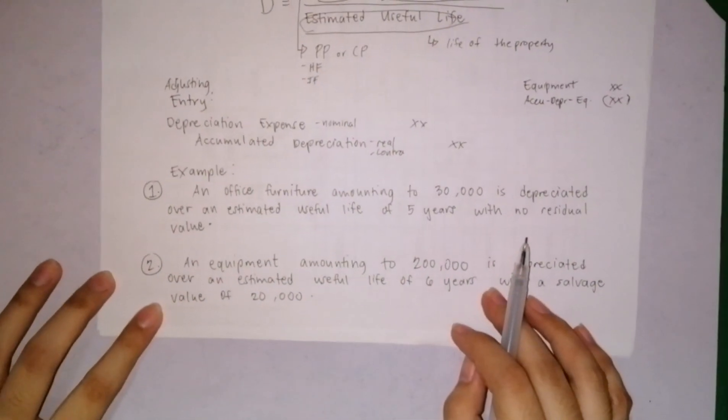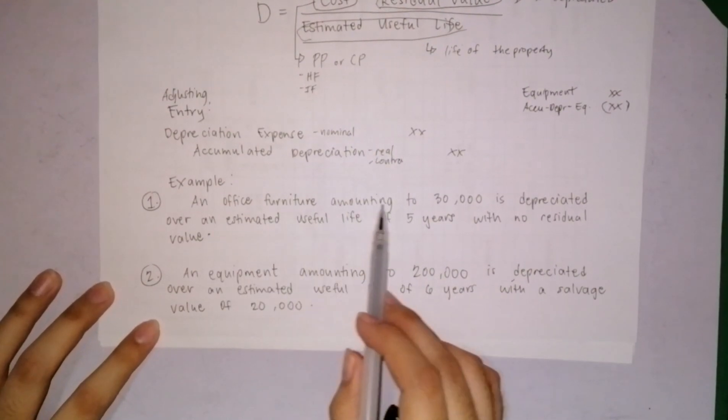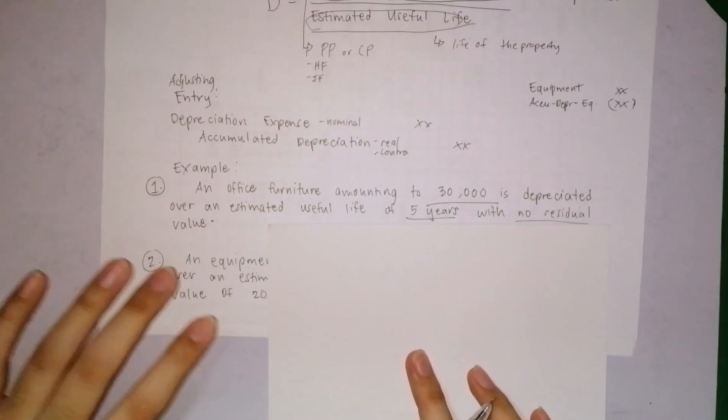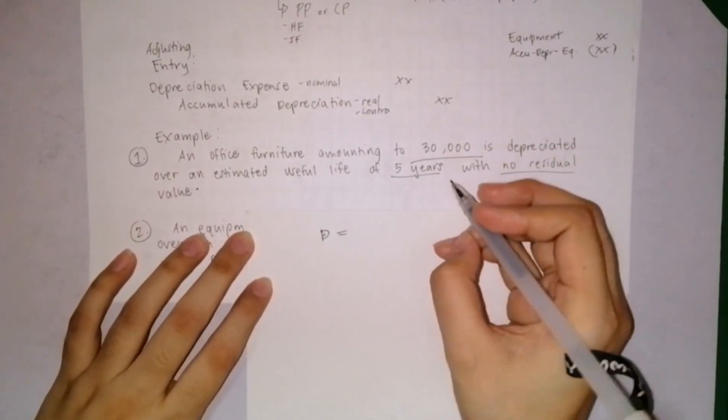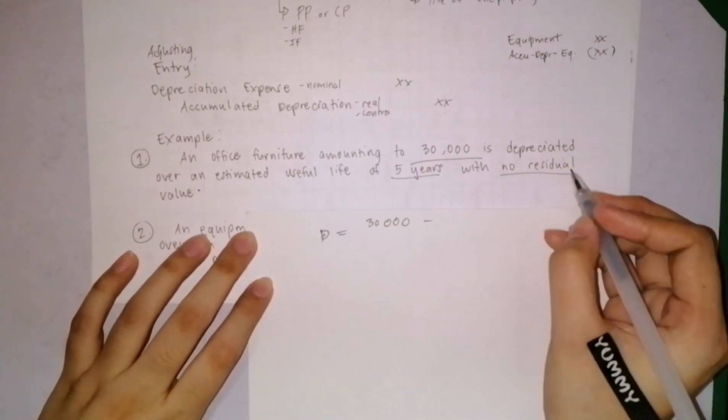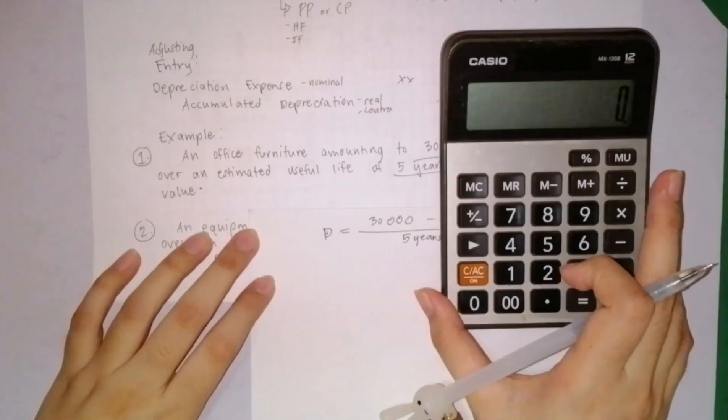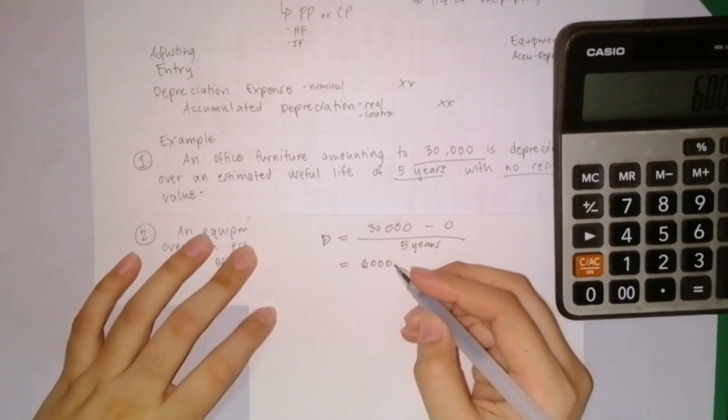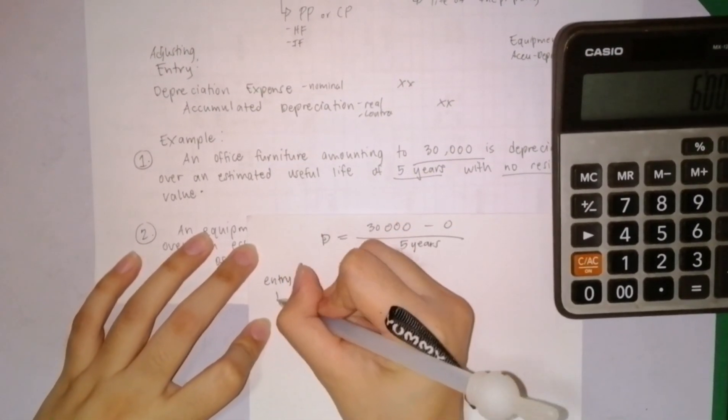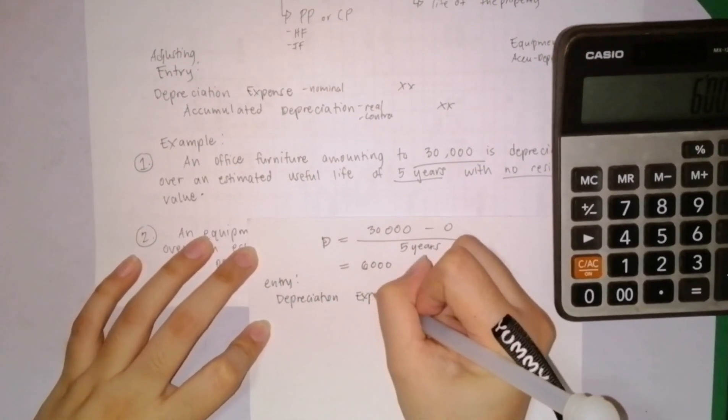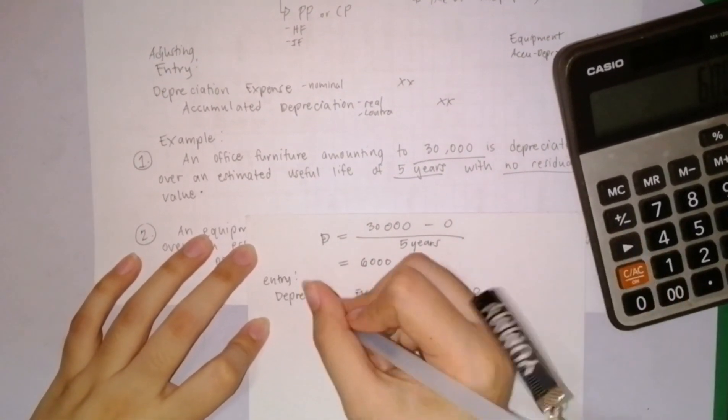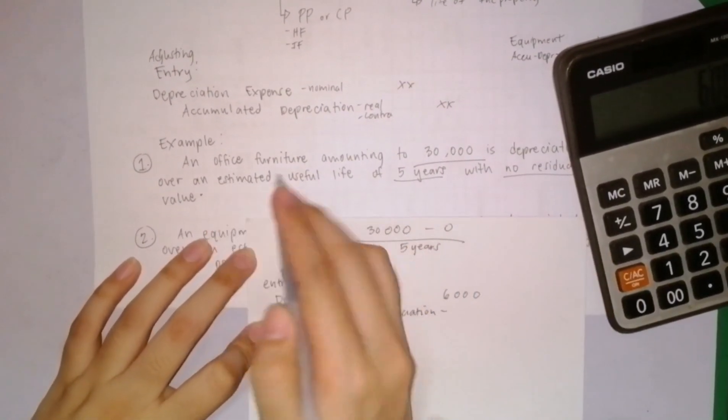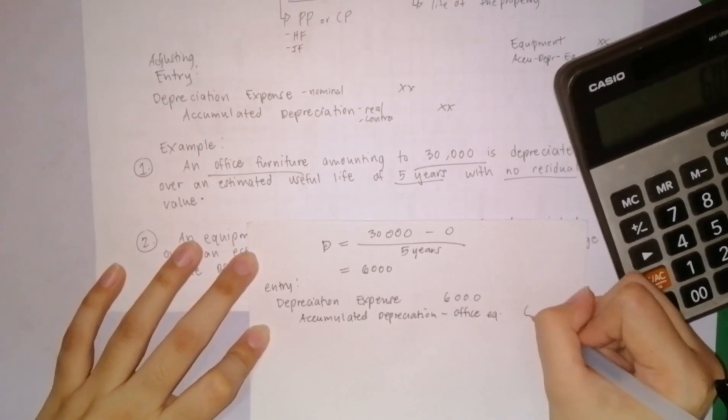Let us compute the depreciation expense for our two examples. First example: an office furniture amounting to 30,000 is depreciated over an estimated useful life of 5 years with no residual value. Depreciation for the year equals the cost of 30,000 minus 0 since there's no residual value over 5 years. We compute 6,000. To record, we debit depreciation expense of 6,000 and credit accumulated depreciation - office furniture, which is 6,000.